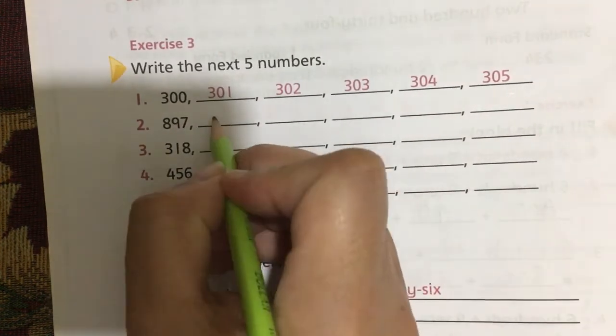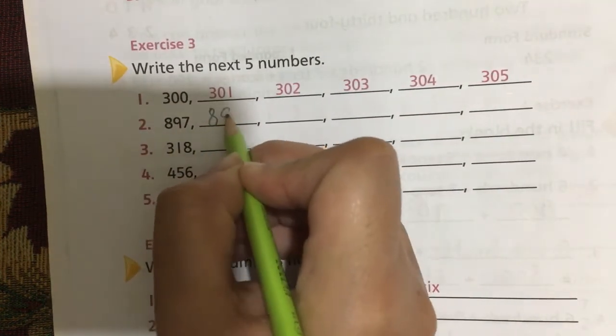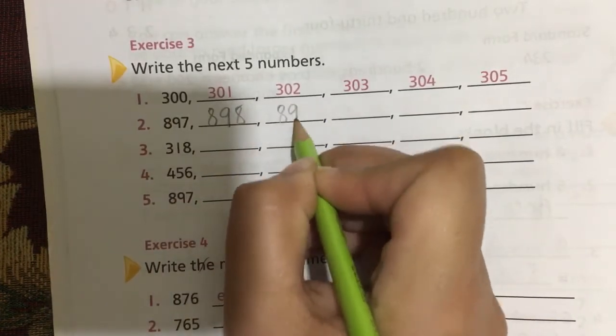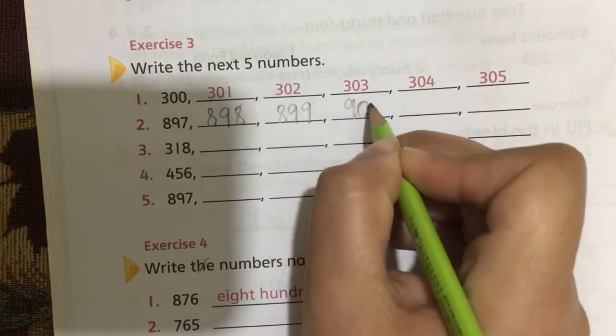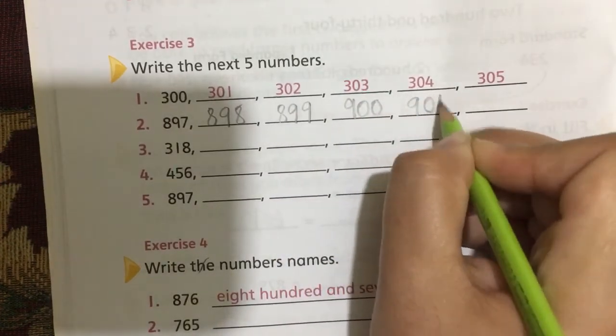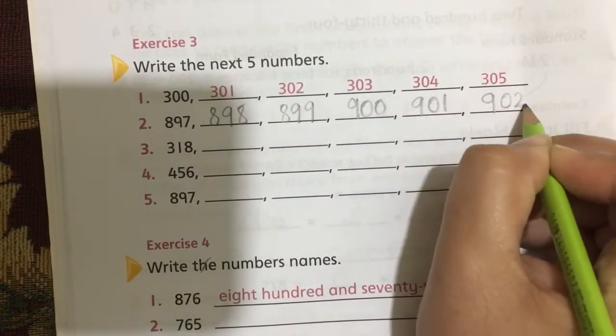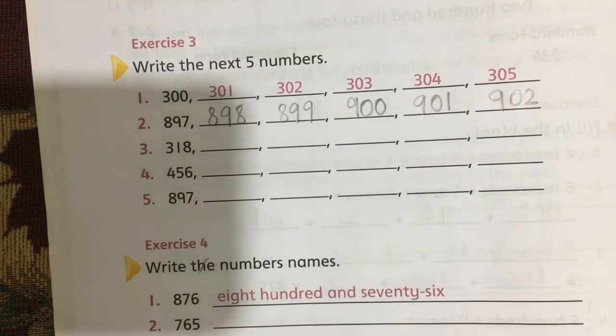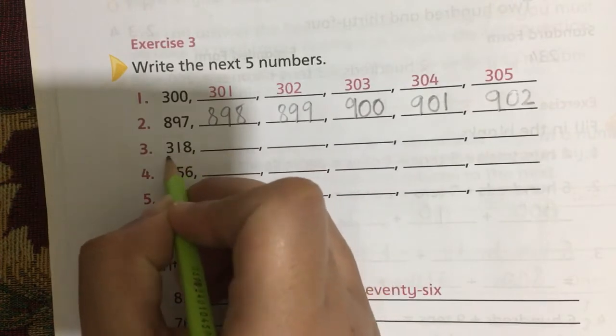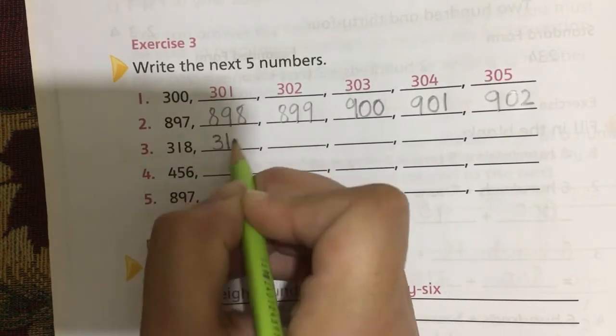898, 899, and then 900, 901, 902. These are five numbers after 897. Question number three is 318, 319.